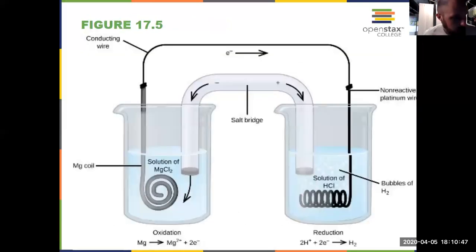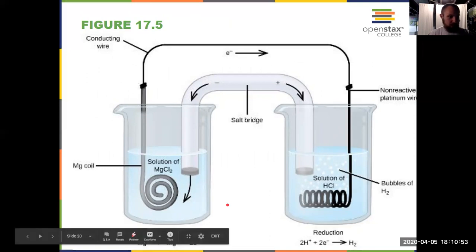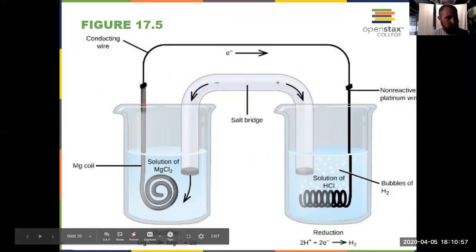So this is another diagram of a galvanic cell, just showing the reaction that we saw previously with our cell notation. Here I have the magnesium coil. That's an active electrode. Over here, because I've got hydrogen that's bubbling off, I have platinum wire that's acting as an electrode, but it's not actually participating in the reaction.